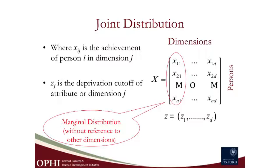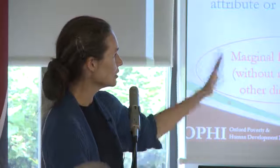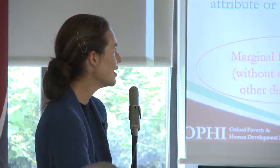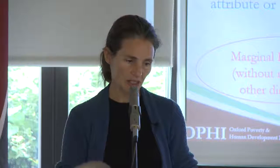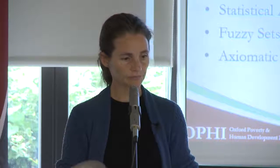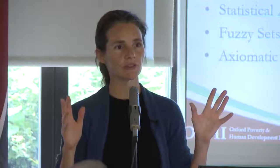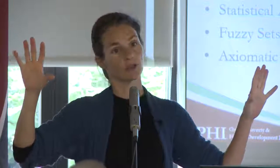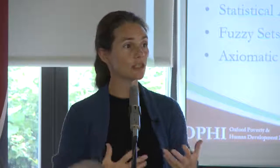In terms of joint distribution — if you prefer to see it in the matrix — dashboards and composite indices aggregate only vertically across all people in society for a given dimension. Those two approaches do not reflect the joint distribution of deprivations, but are very widely used and certainly serve some purpose. They will continue to be used because we cannot pack everything into a household survey — we do need topical surveys.